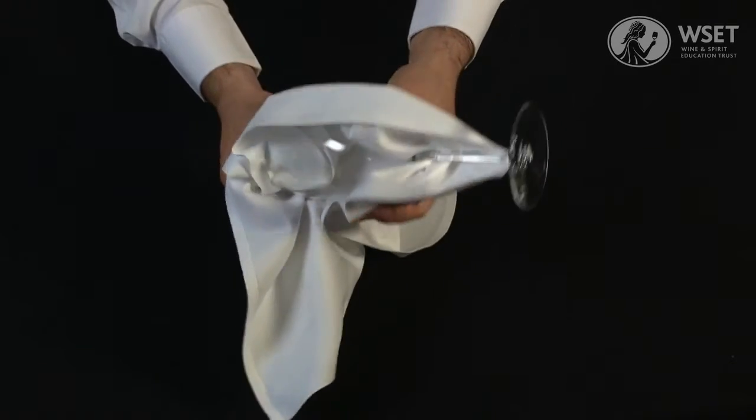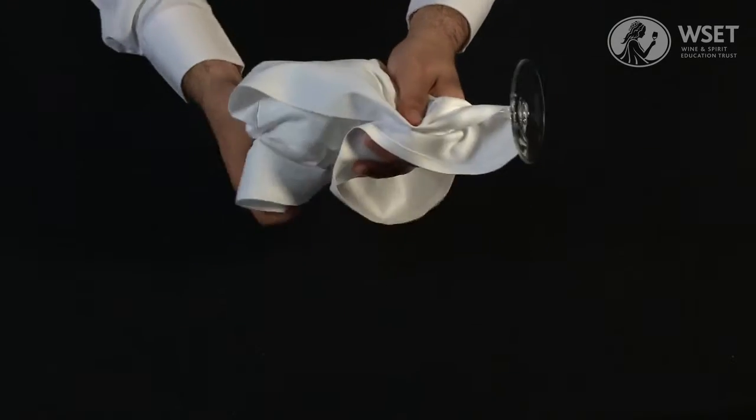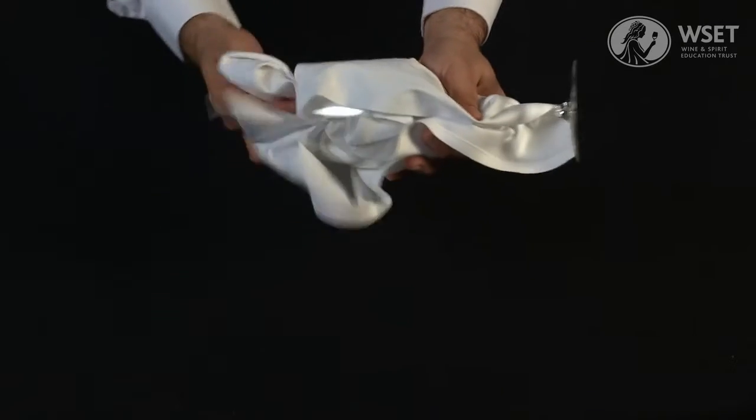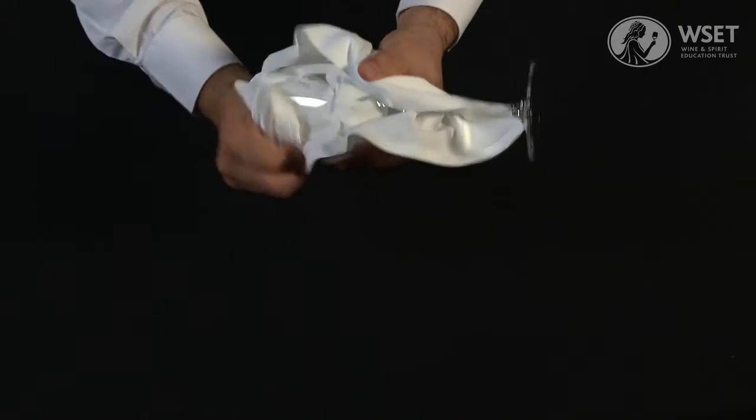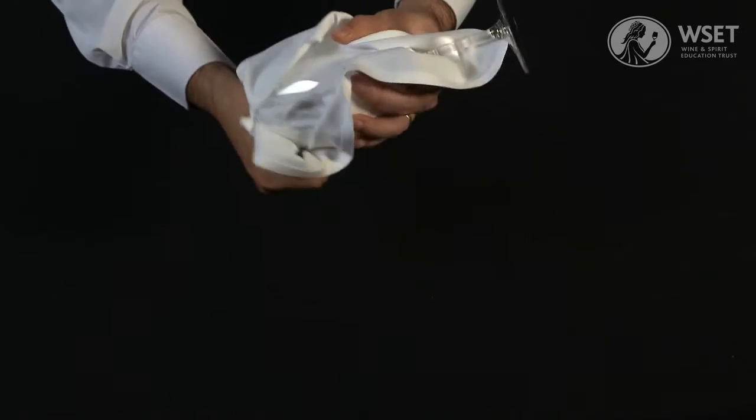Fill the bowl with the cloth. Then, holding the outside of the bowl, rotate the cloth, cleaning both sides of the glass.